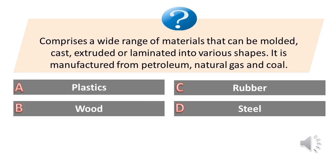Comprises a wide range of materials that can be molded, cast, extruded or laminated into various shapes. It is manufactured from petroleum, natural gas and coal. A. Plastics. B. Wood. C. Rubber. D. Steel. The answer is A. Plastics.